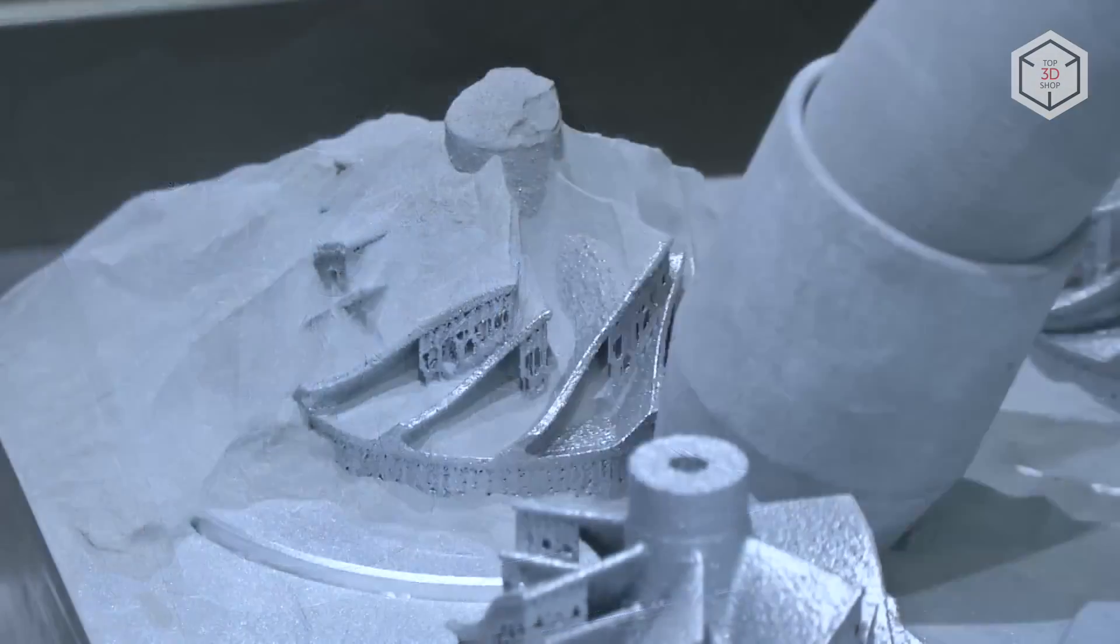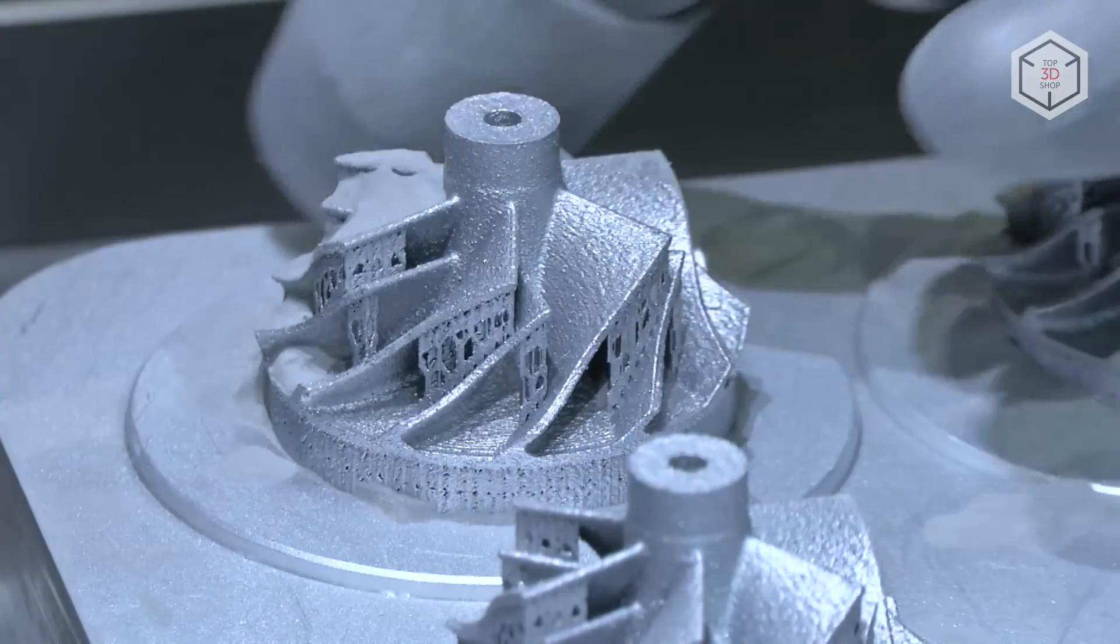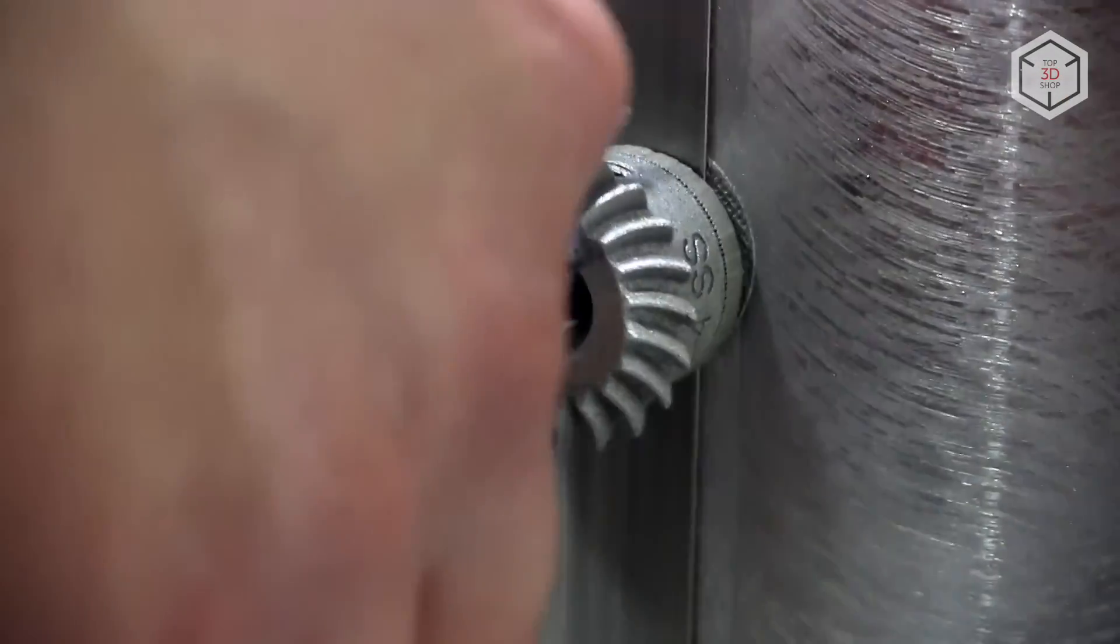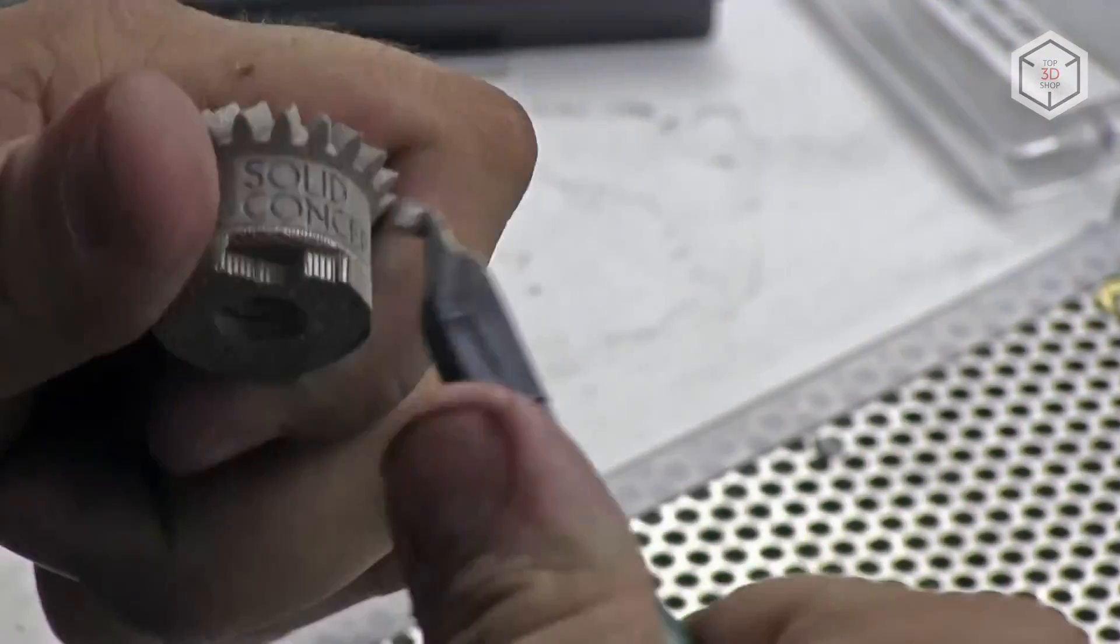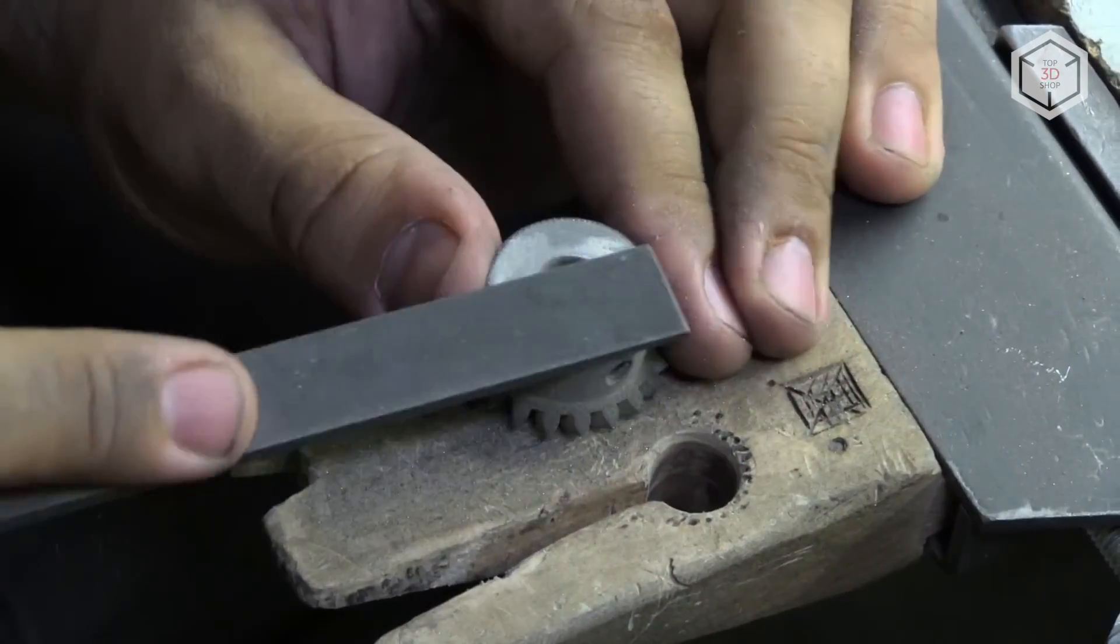Finished parts are removed from the platform mechanically. In some cases, special tools such as EDM cutting machines are used. If a part requires support structures, you will subsequently have to remove them. Since SLM printers do not use additional materials to build supports, this can be a difficult and time-consuming process.